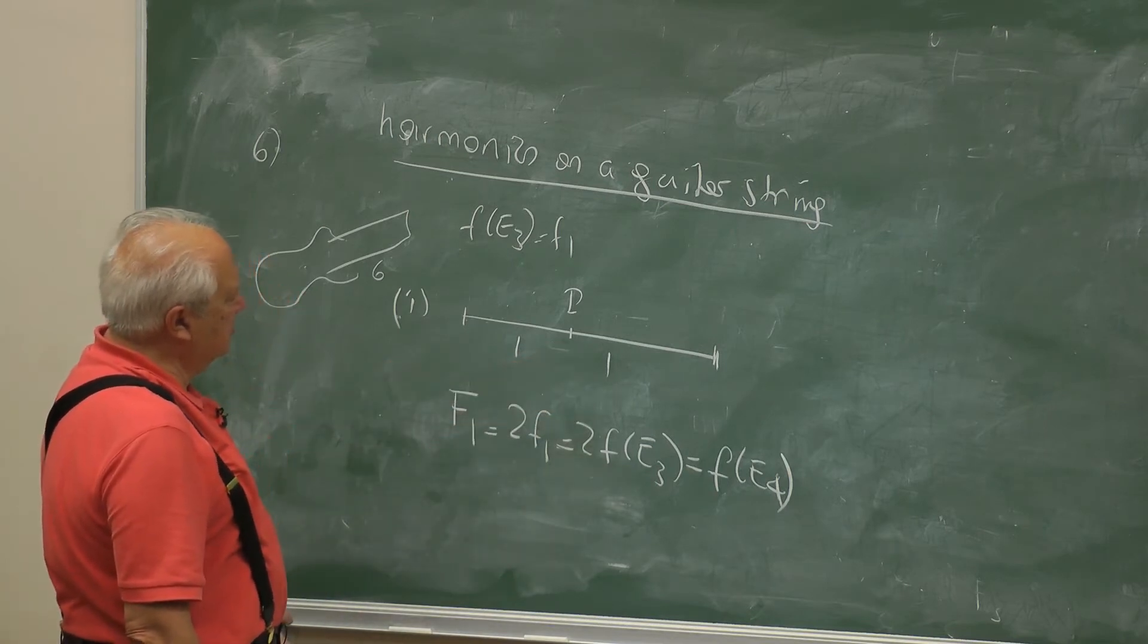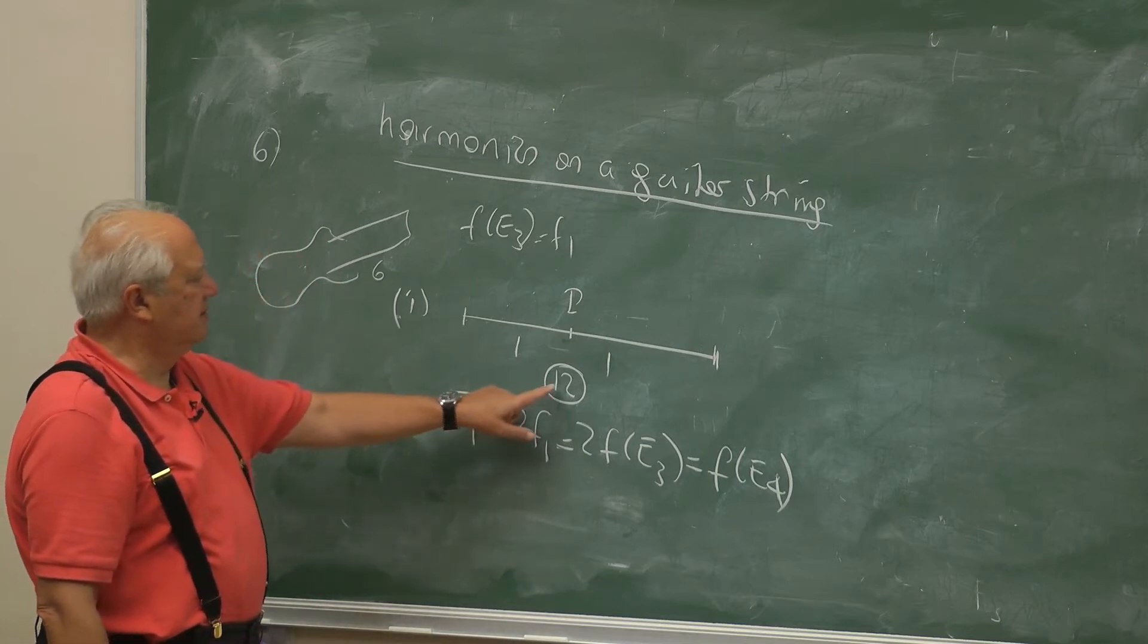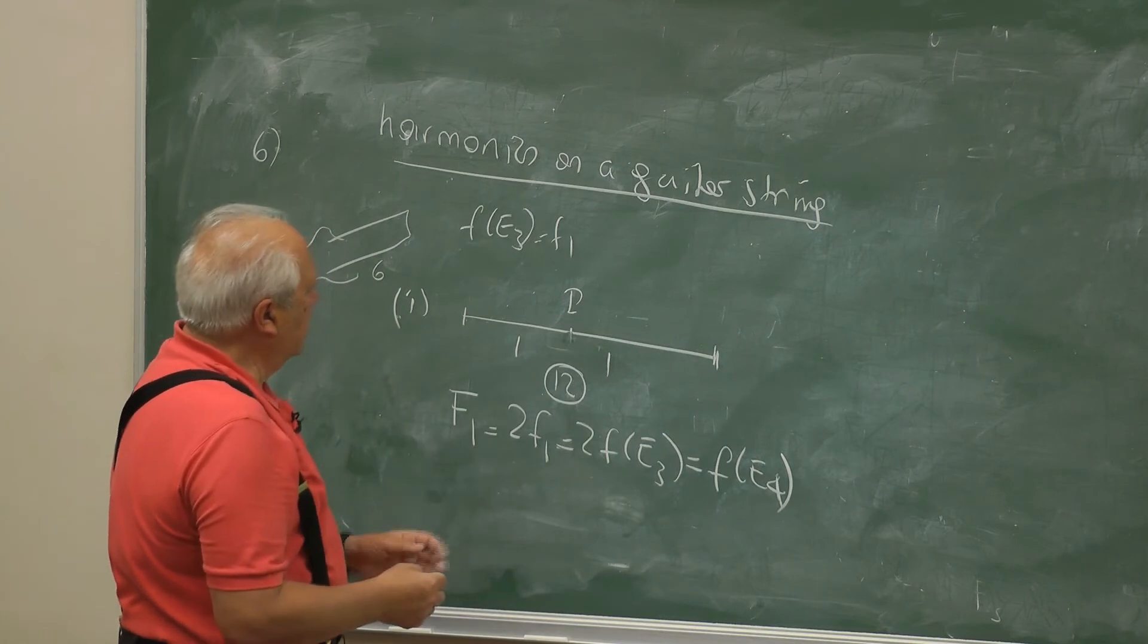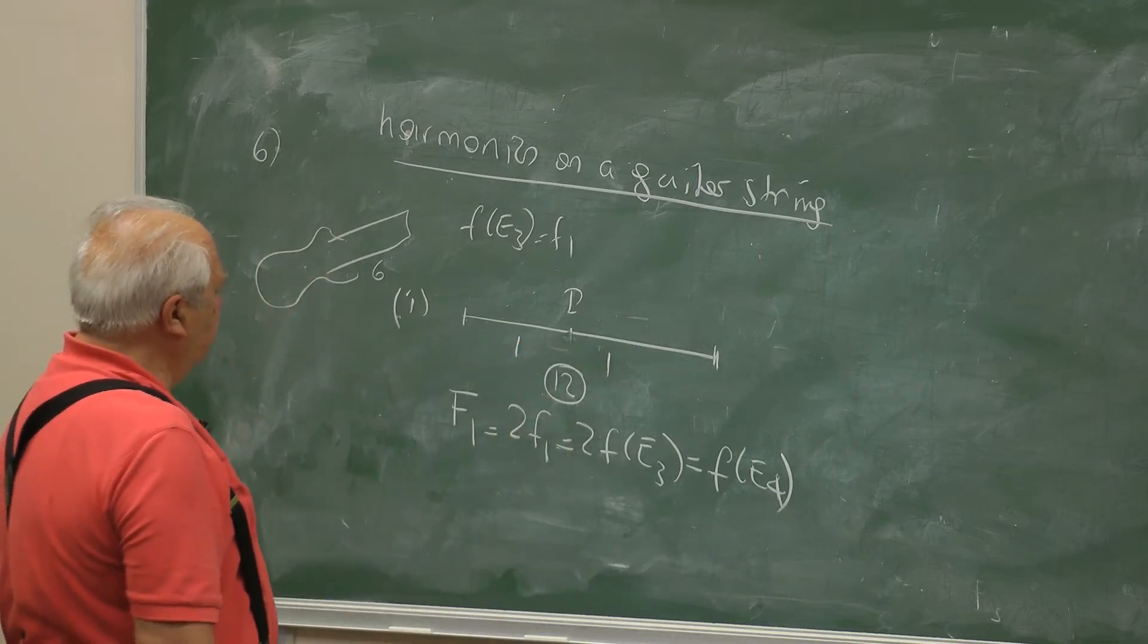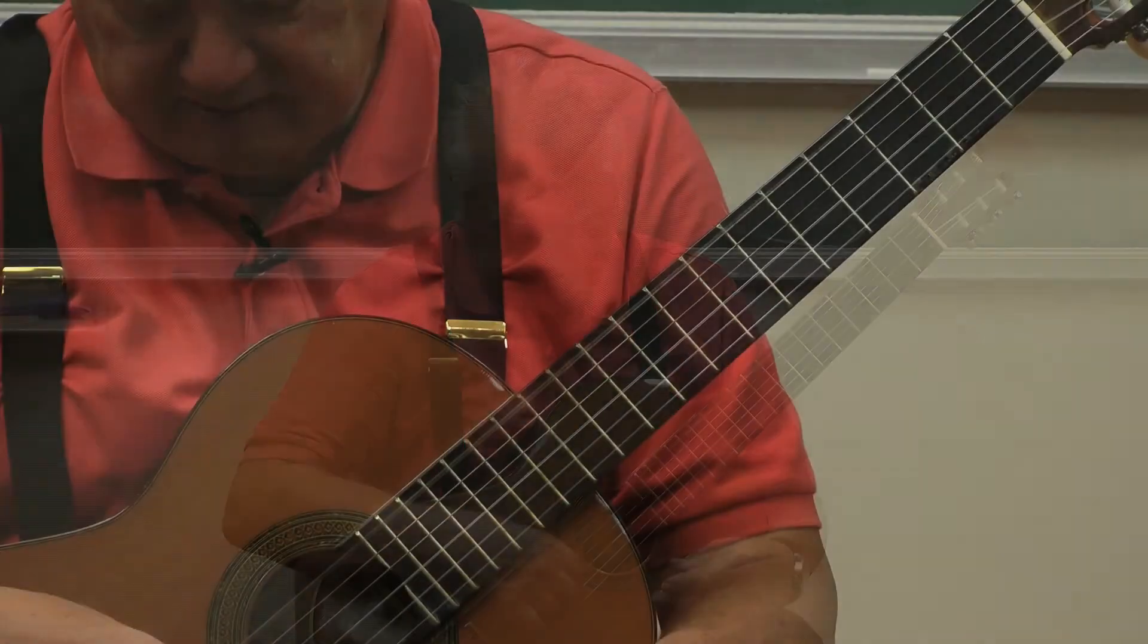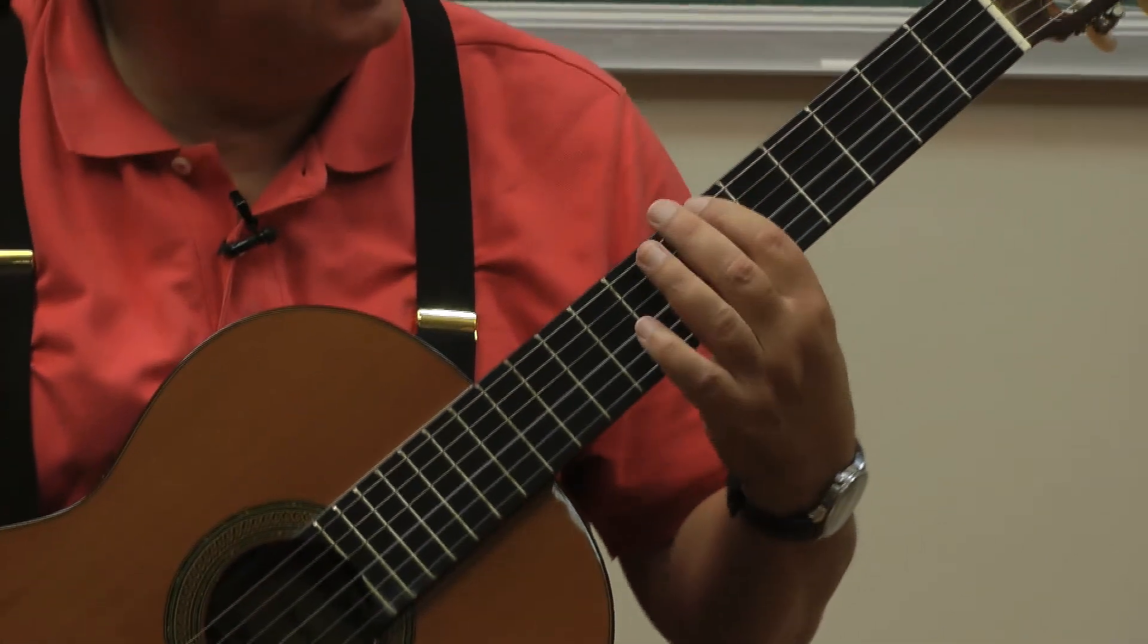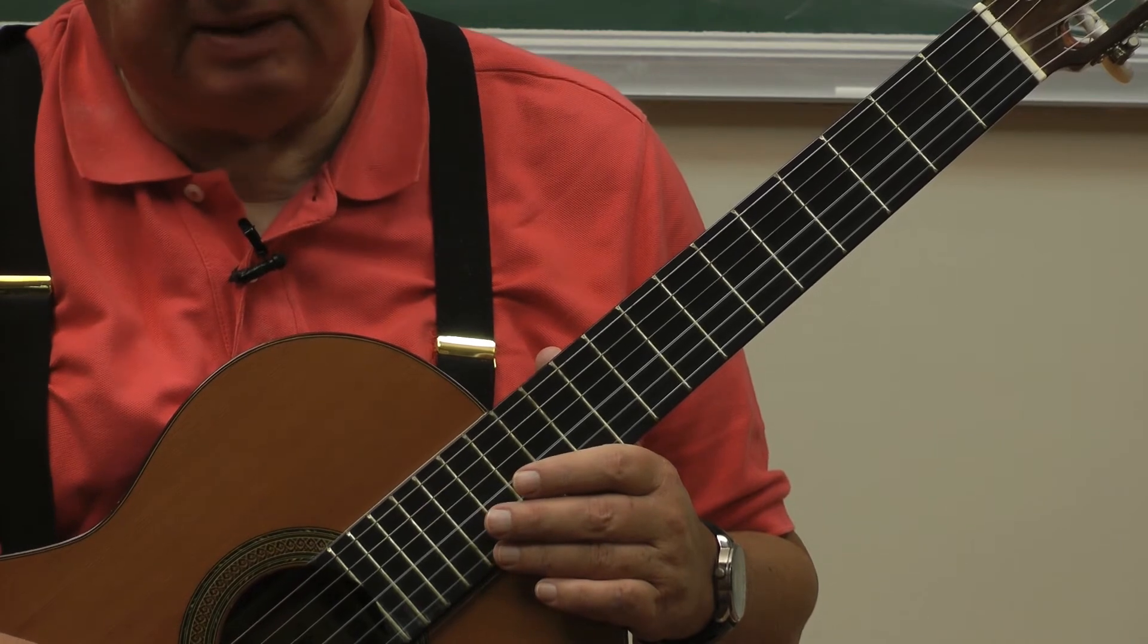So point P, where is it on the guitar string? It turns out this is at the twelfth fret. So at the twelfth fret, if you put your finger, you play it and you immediately take your finger out. Because otherwise, you will be playing a string with half as long. The whole string will oscillate, but P will be node. And you will hear an f of e4.